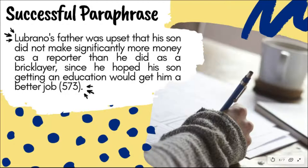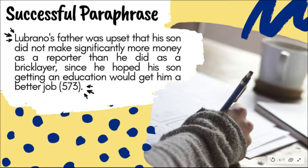Here's an example of a paraphrase of that original source that followed the tips we discussed earlier. This paraphrase says: "Lubrano's father was upset that his son did not make significantly more money as a reporter than he did as a bricklayer, since he hoped his son getting an education would get him a better job." The author found a point they wanted to highlight and put it into their own words, saving space and keeping the flow of their own writing while maintaining the author's original ideas and meaning as closely as possible.